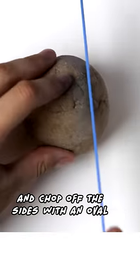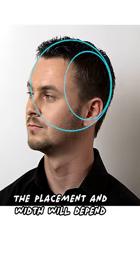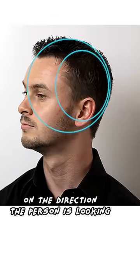Start with a circle and chop off the sides with an oval. The placement and width will depend on the direction the person is looking.